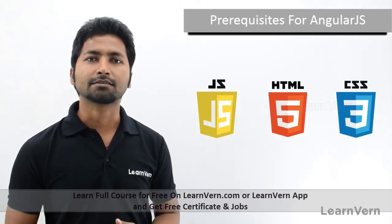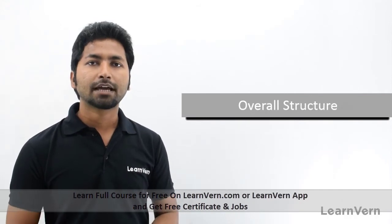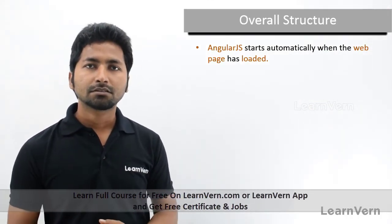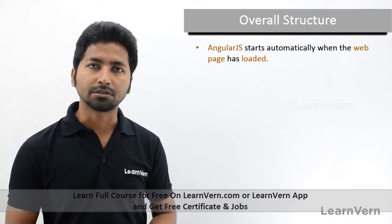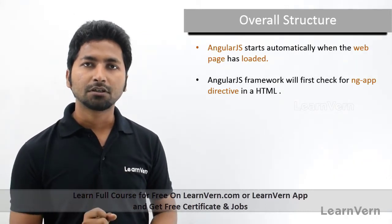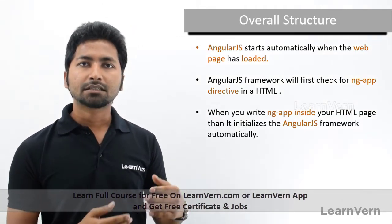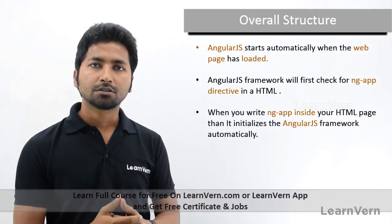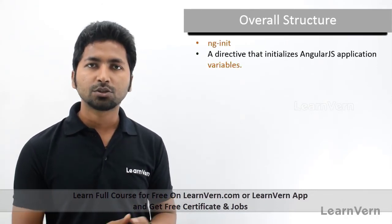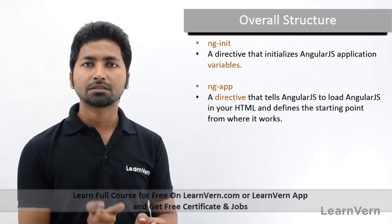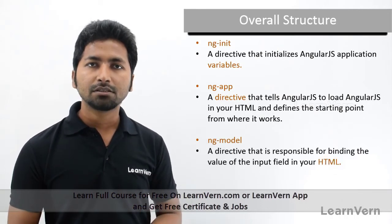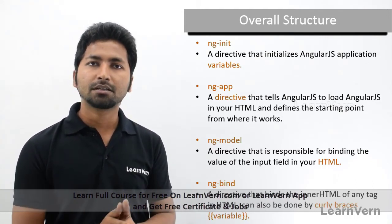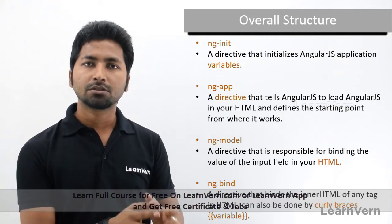Now let's look at the overall structure of AngularJS. When your page loads in the browser, AngularJS loads and looks for the ng-app directive. Once it finds that directive, it starts compiling that section of the page and executes the whole program. For this we need: ng-init to initialize variables, ng-app to declare the application module, and ng-model to bind variables to your HTML.